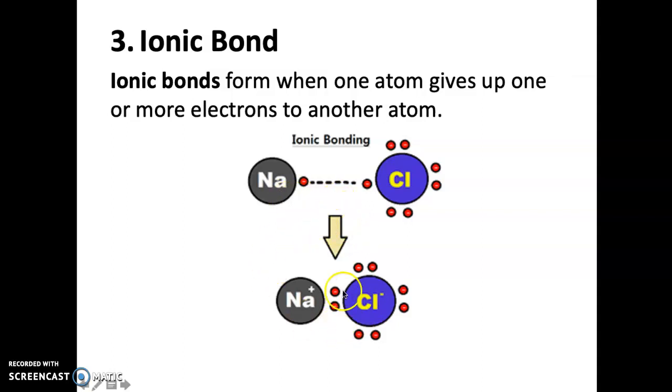So what happens is that this sodium actually donates it off, and because it's lost an electron, it's lost a negative, so it ends up being slightly positive. The chlorine gained a negative, so it's slightly negative. So these two are attracted to each other because positive is attracted to negative. They kind of hang out together.